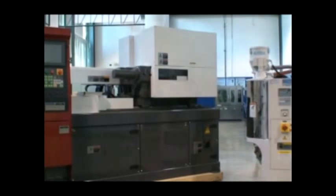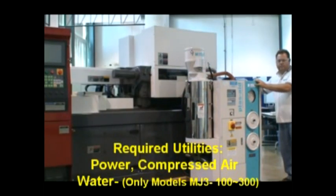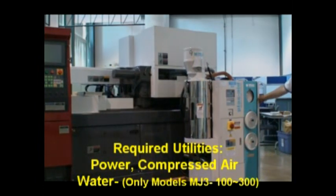After all your components have been identified, you can start to install them as necessary. Start by placing the dryer within the vicinity of the press and ensure that proper power, compressed air, and for models MJ3-100 or larger, cooling water is available.